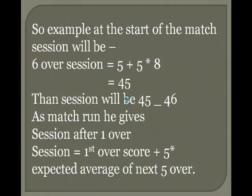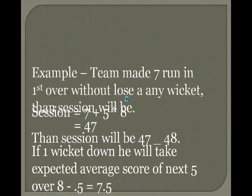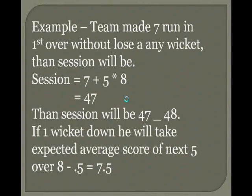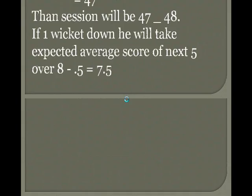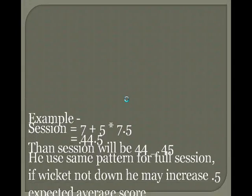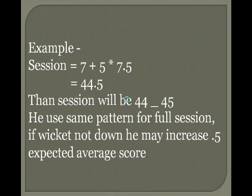As the match runs, he gives session after 1 over: 1st over score plus 5 multiplied by expected average of next 5 overs. Example: team made 7 in the first over without losing any wicket — session will be 7 plus 5 multiplied by 8 equals 47, offered as 0 for 47-48. If 1 wicket down, he takes expected average of next 5 overs as 8 minus 0.5 equals 7.5.